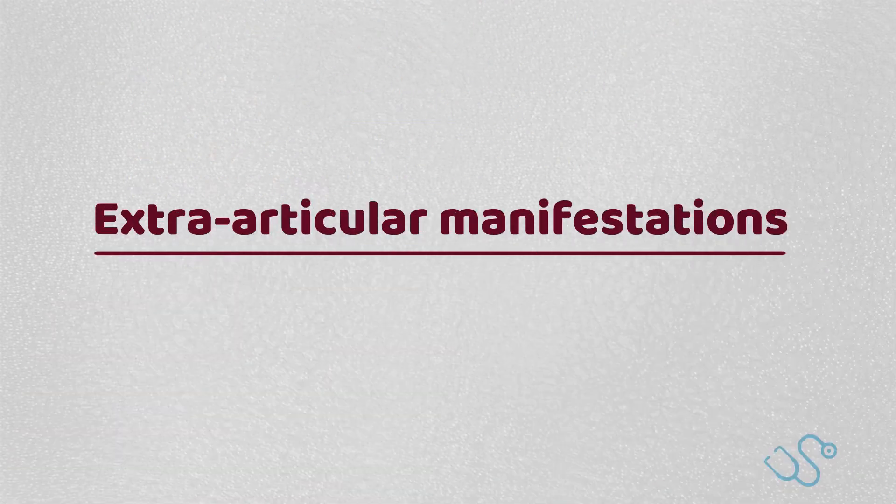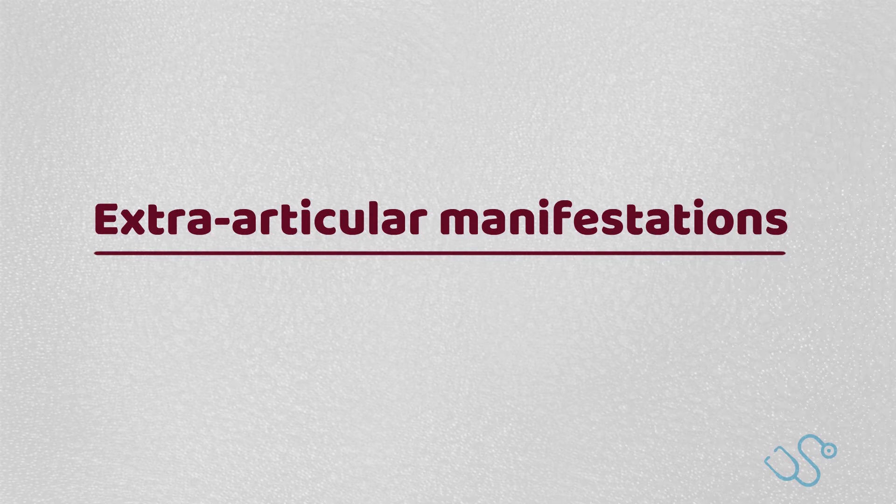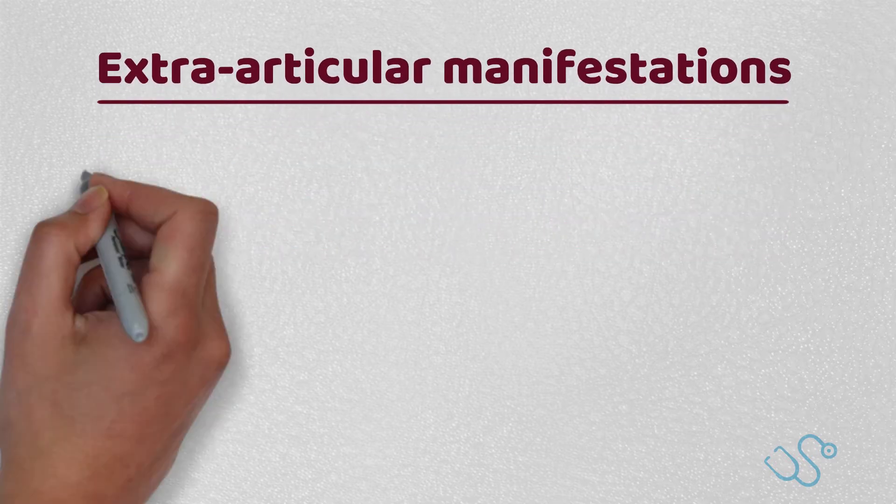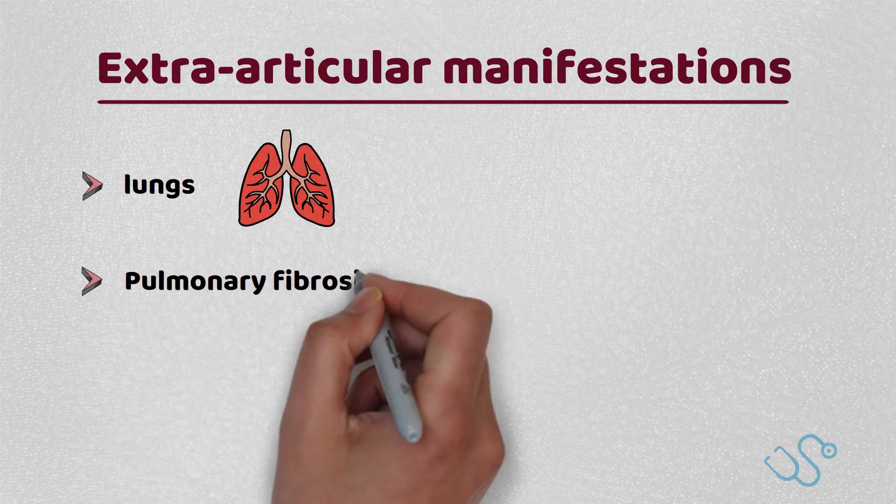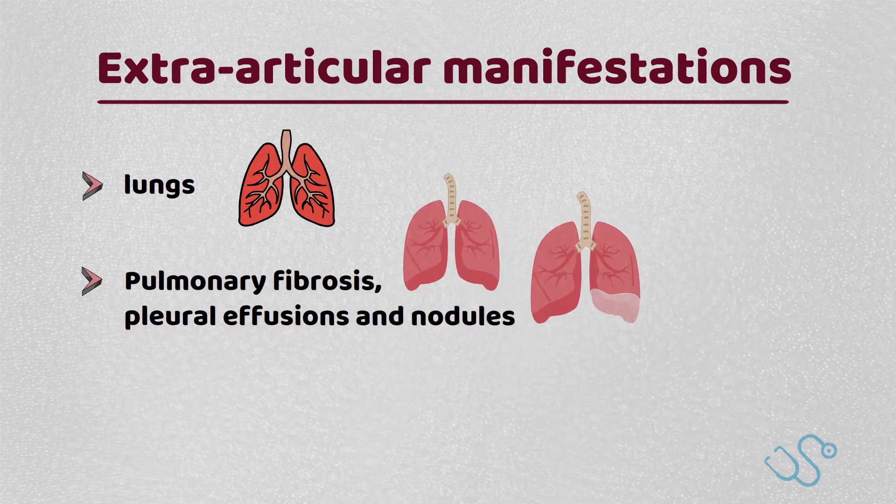Let's move on to extra-articular manifestations. There are a number of issues that occur outside the joint with rheumatoid arthritis. Most notably in the lungs, there are complications of pulmonary fibrosis, pleural effusions, and nodules.